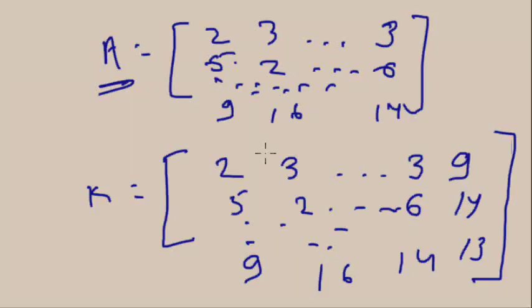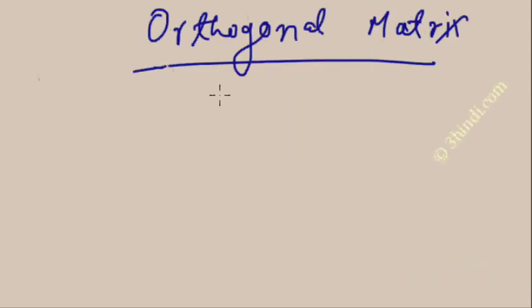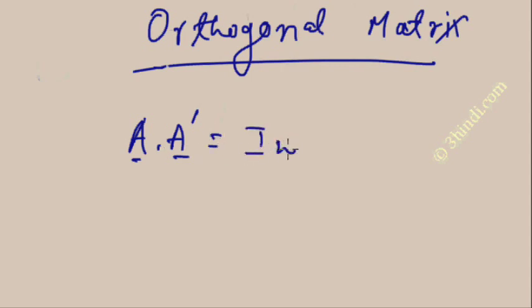One more thing to remember: the matrix K is also known as the augmented matrix. Now I will explain what is an orthogonal matrix. An orthogonal matrix is a type of matrix with the property that if you multiply it by its transpose, you get the unit matrix I. So if A is an orthogonal matrix, then A times A-transpose equals I.